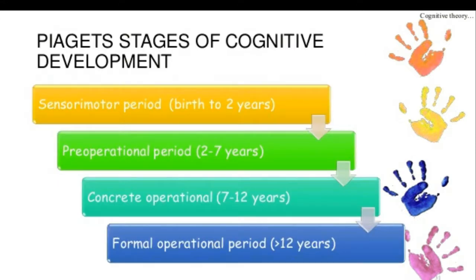Piaget's stages of cognitive development are: sensory motor period (birth to 2 years), pre-operational period (2 to 7 years), concrete operational period (7 to 12 years), and formal operational period (more than 12 years).